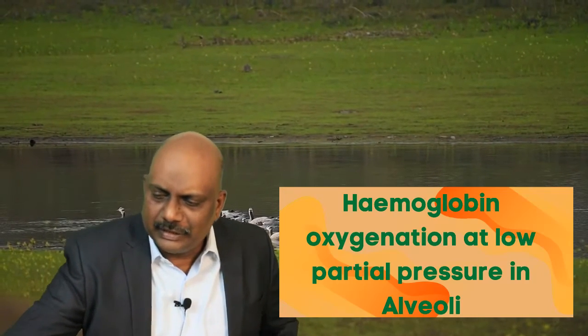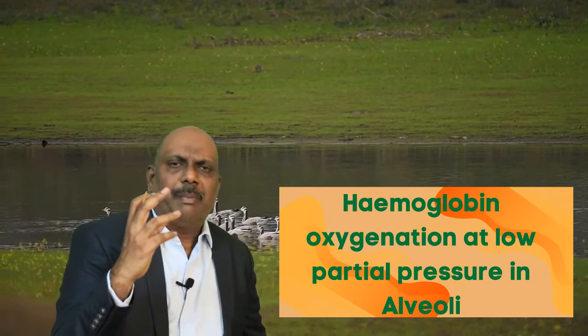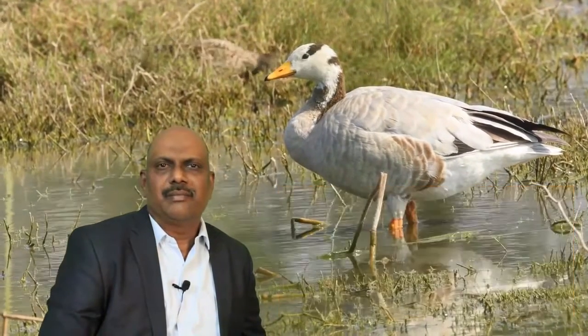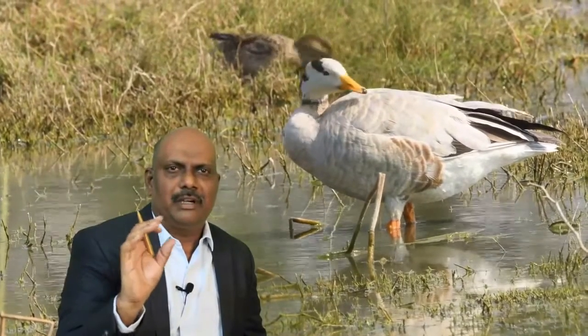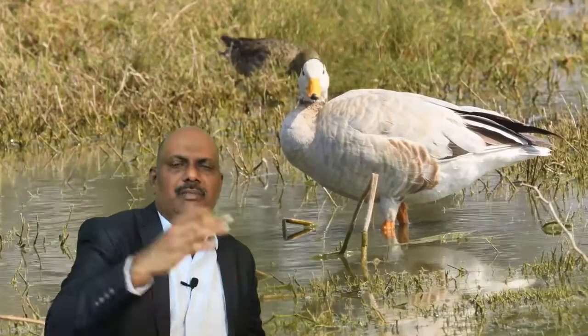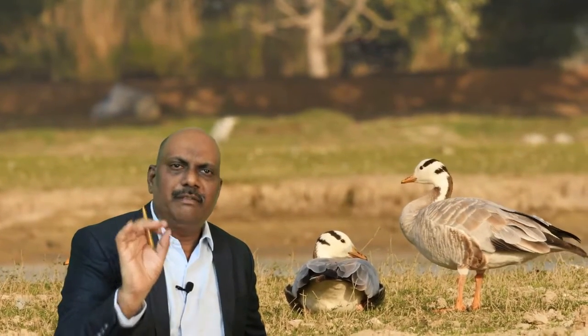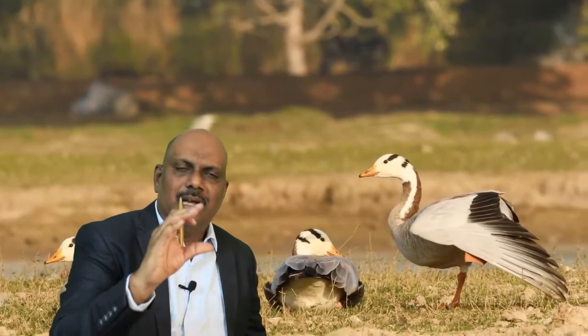The first important acclimatization is the capacity of the hemoglobin of this bird to extract oxygen at a low partial pressure. The alveolar partial pressure of oxygen is very important for oxygen to diffuse from the lungs into hemoglobin. For most birds, a higher partial pressure — say 70 Pascals — is needed. For the Bar-Headed Geese, oxygen diffusion into the blood happens even at just 30 Pascals.